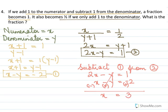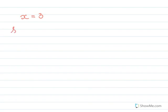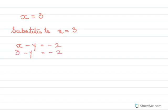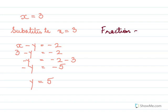Now to find y, substitute x equal to 3 into equation 1: x minus y equal to minus 2, so 3 minus y equal to minus 2, giving minus y equal to minus 5, so y equal to 5. The fraction is numerator x over denominator y, which is 3 over 5.